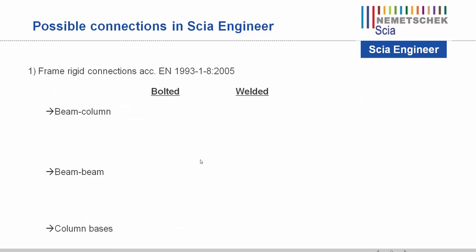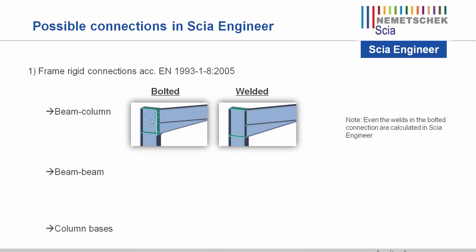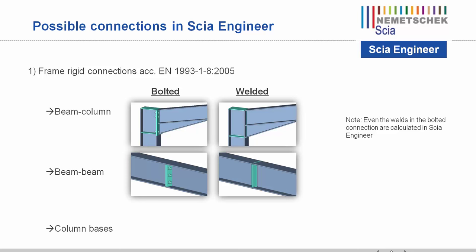Some examples of possible connections in SIA Engineer: for beam-column connections, it is possible to input them as bolted or welded. The welds of a bolted connection are also checked, as they are necessary to connect the end plate with the beam. So not only the bolts but also the welds of a bolted connection are checked. The next type is beam-beam or beam splice as mentioned in Eurocode 3, configurable with bolts or as welded. And the column base, which can also be inputted with the anchor in the concrete foundation.